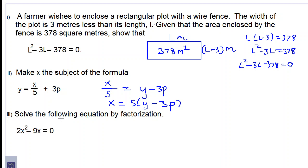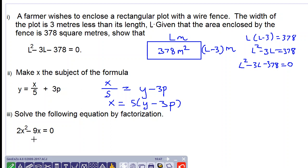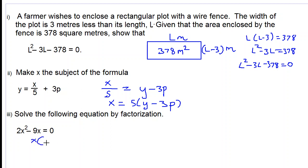Let's look at 3, solve the following equation by factorization. So let's take out the common factor in these two terms which is X. So we have X times 2X minus 9 is equal to 0.